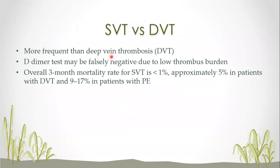There are important differences between SVT and DVT: SVT is more frequent than DVT in clinical settings. D-dimer may be falsely negative because the clot burden in superficial venous thrombosis is less than in DVT, so you cannot rely on this test. Mortality is lower in SVT, but it can still progress to DVT and pulmonary embolism, whereas DVT carries higher mortality and a higher incidence of pulmonary embolism.